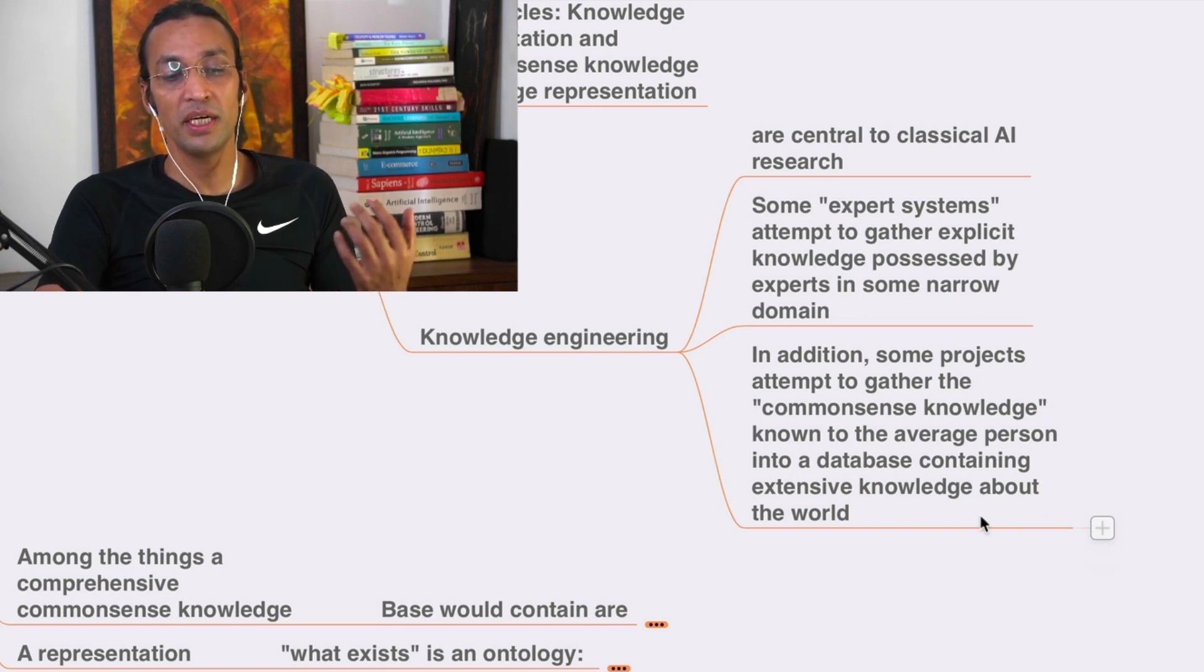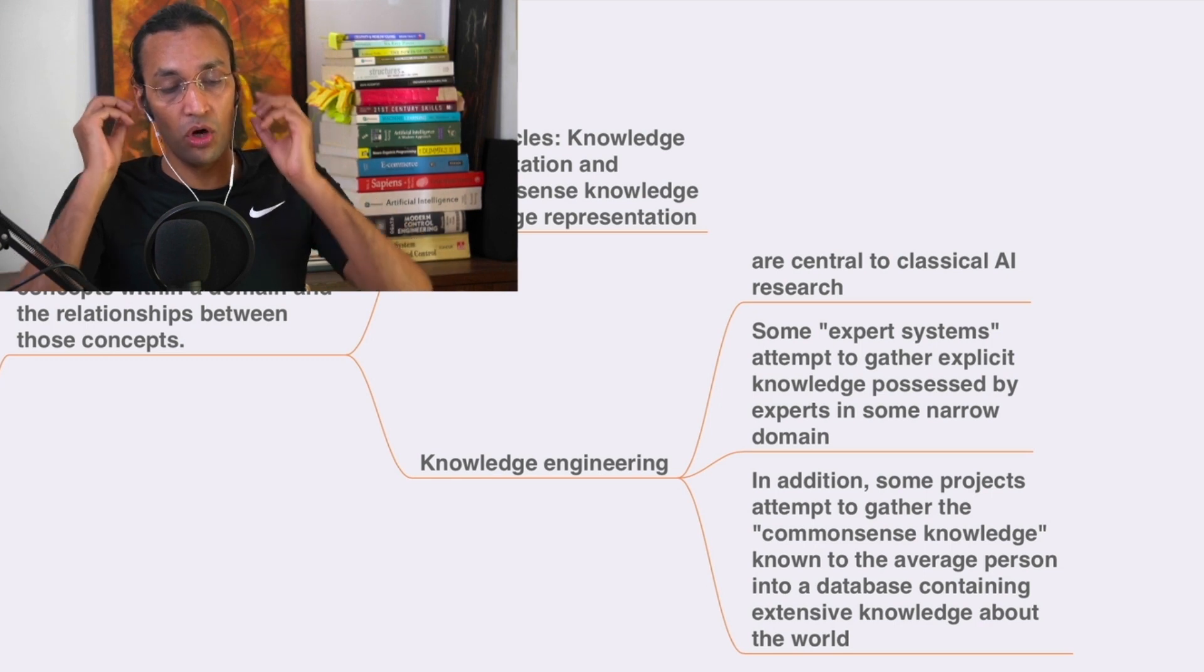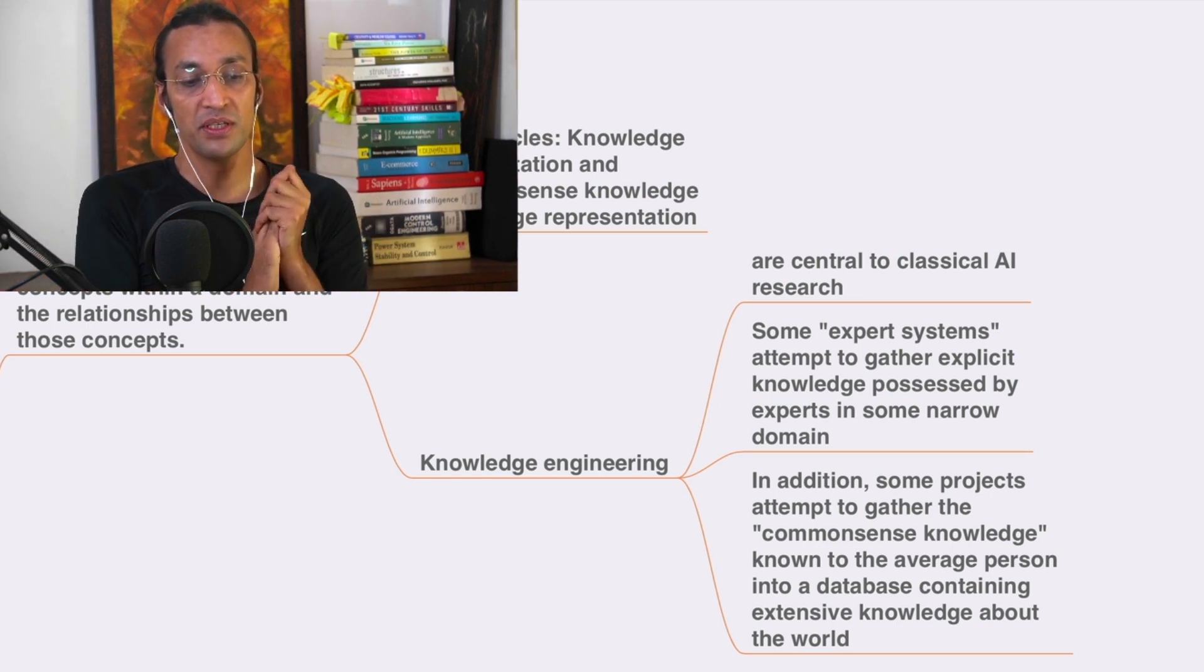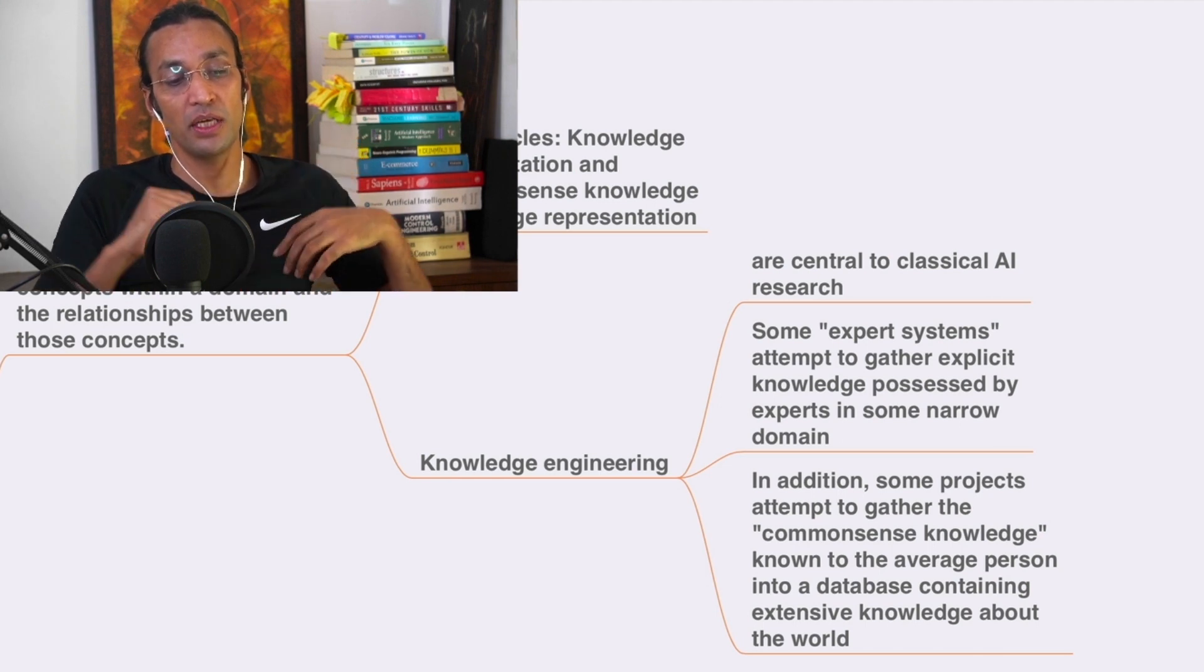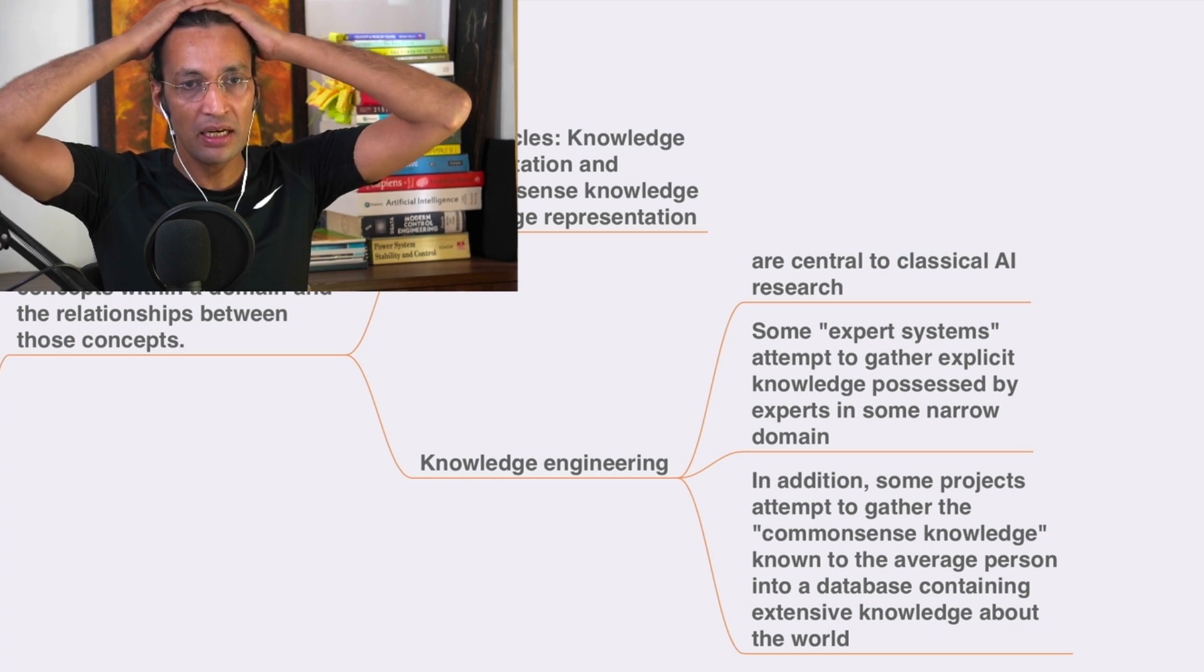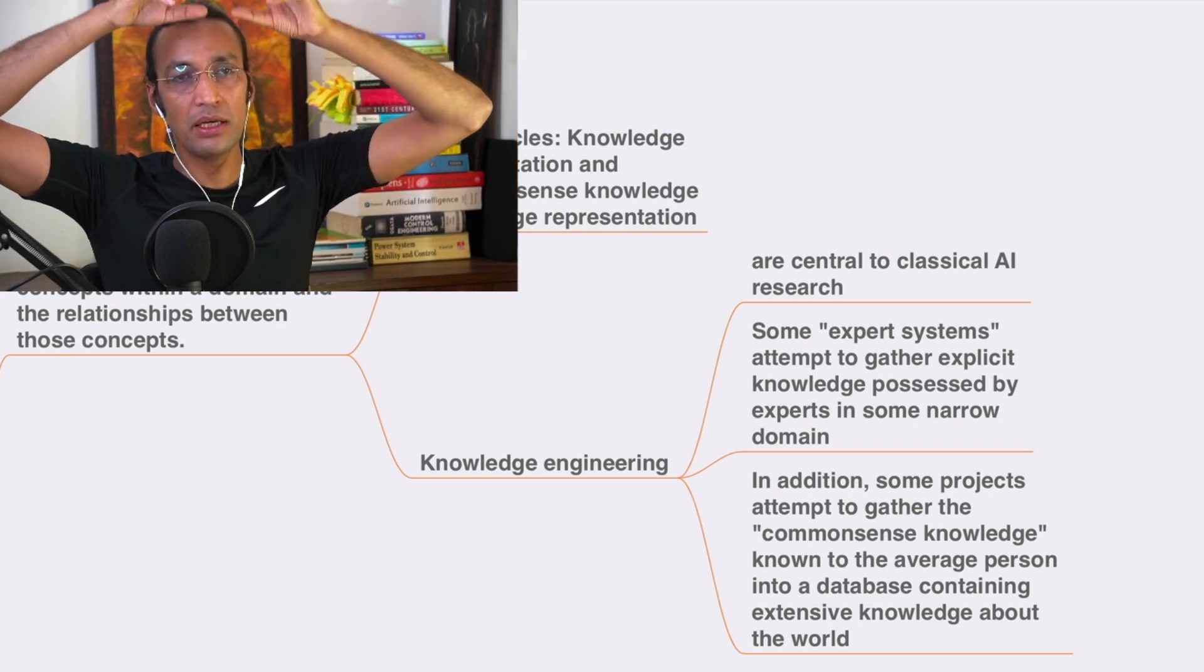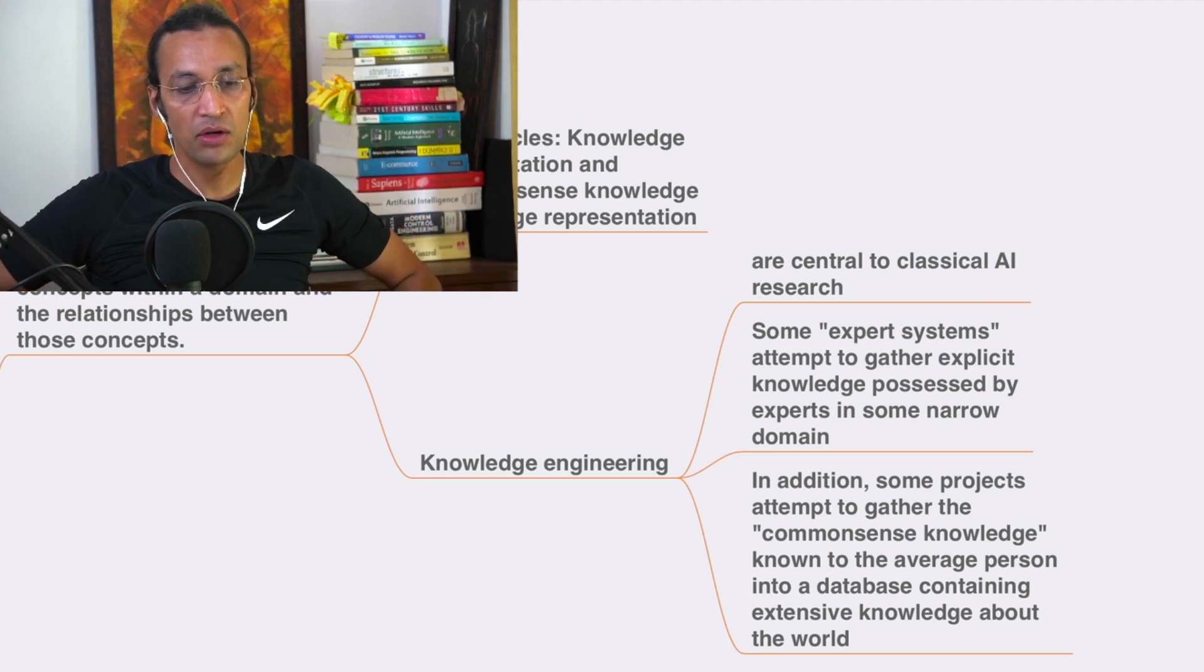They talked about expert systems attempting to gather explicit knowledge processed through experts in a narrow domain. When you go very narrow, they realize that knowledge engineering, going deep into a narrow way into the subject, that would be a good thing to solve the problems.